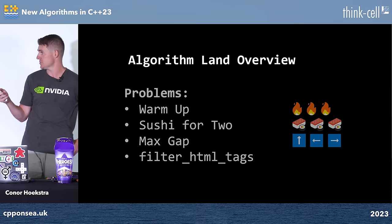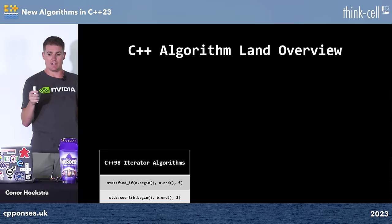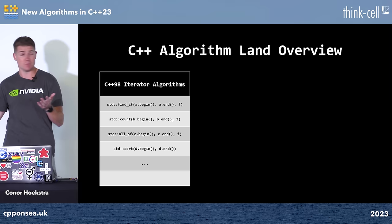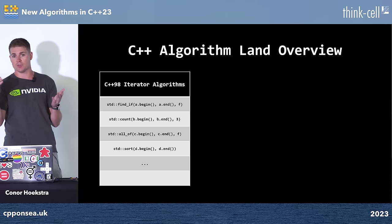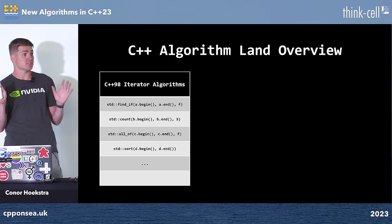C++ algorithm land overview: there are currently what I consider three verticals when referring to algorithms. The first is what was introduced in C++98 — the iterator algorithms. These include things like find_if, count, accumulate, either in the algorithm header or the numeric header. You typically pass two iterators to represent a range or sequence. This has been in C++ since ISO C++98.